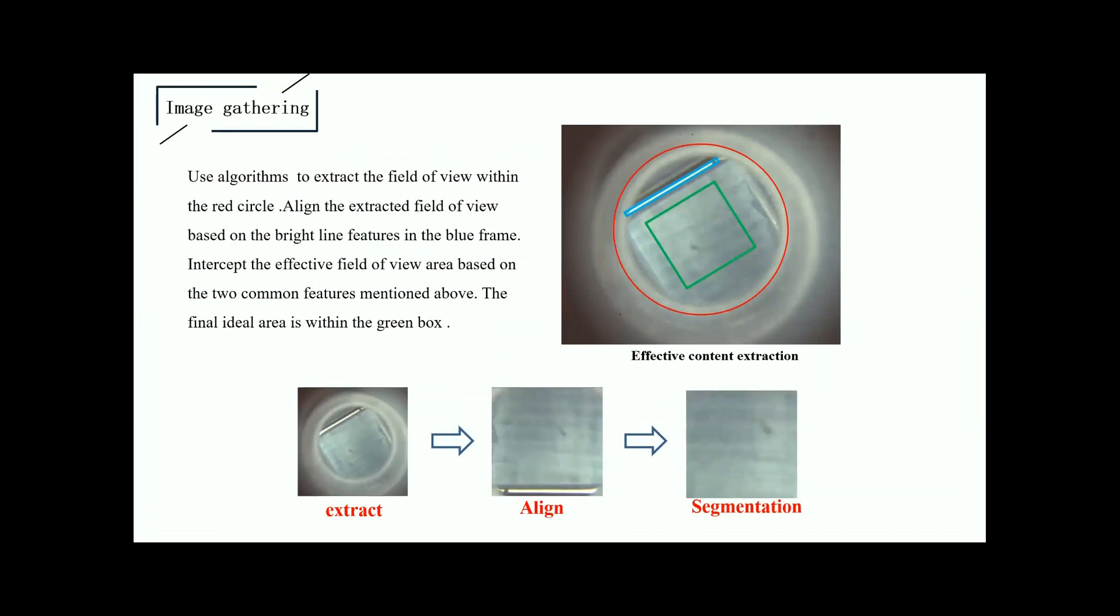And with the built system, we conduct some experiments and gather results. First is the result of the image processing. Use algorithms to extract the field of view within the red circle. Align the extracted field of view based on the height line features. Intercept the effective field of view based on the two common features mentioned above. The final ideal area is within the green box. The flow is: extract, align, and segmentation.